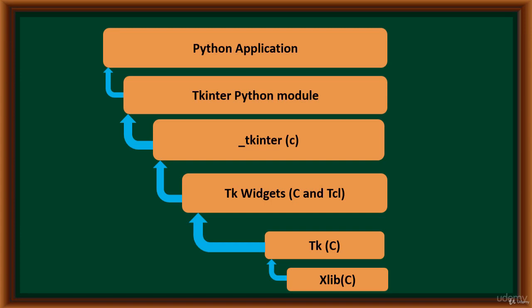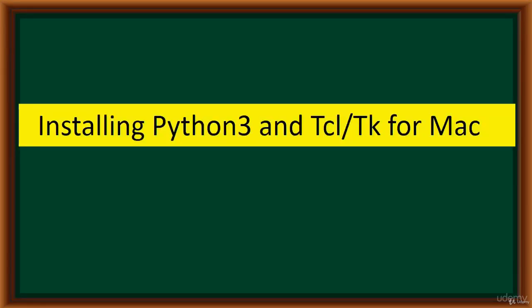TK version 8.0 introduced new GUI elements themed to match the appearance of the standard elements in your operating system. For example, running a Python Tkinter script to create a login screen on Windows gives it a native Windows appearance, while running it on Mac OS changes its appearance to reflect the Mac theme. This allows you to write a cross-platform GUI application that maintains the look and feel of the operating system on which it's running.